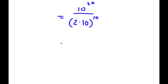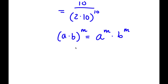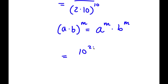Now, if I have something in the form a times b to the power of m, this is equal to a to the power of m times b to the power of m. So in this case, 2 times 10 to the power of 10 is going to equal 2 to the power of 10 times 10 to the power of 10.